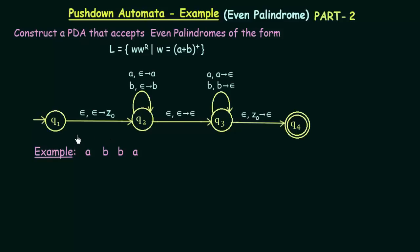Basically, how the Push-Down Automata works is that in the first state, which is our initial state Q1, we push a symbol Z0 into our stack to denote the bottom-most symbol. Then in state Q2, we read the first half of our string and push it onto the stack. When we reach the midpoint, Q2 goes to Q3. In Q3, we read the next half and compare it with the stack elements, popping them if they match. Finally, when we reach the end of the string, we check if Z0 is the bottom-most element, and if so, we pop it and reach the final state.